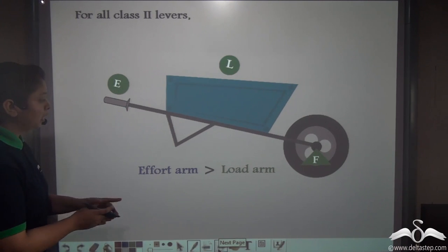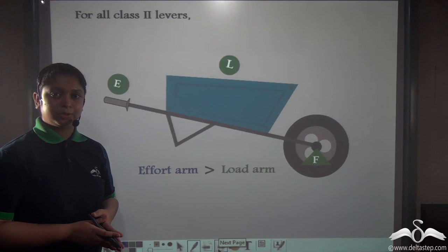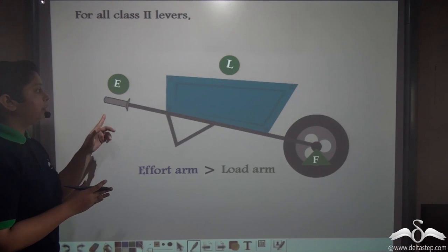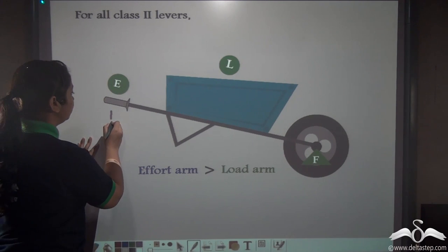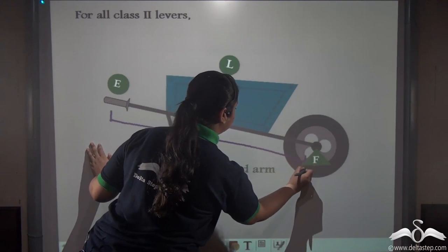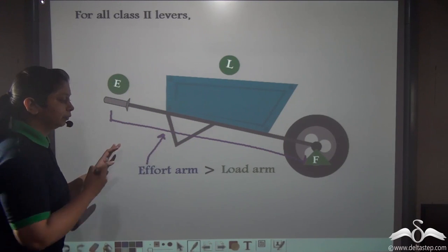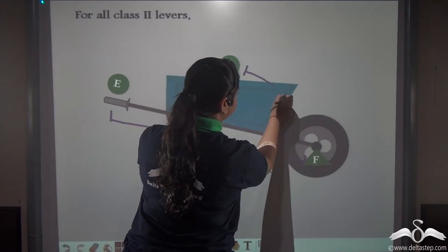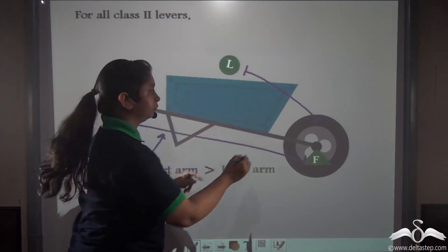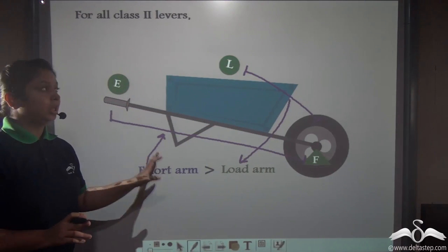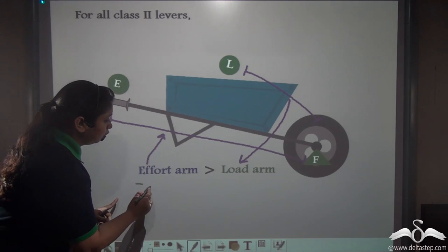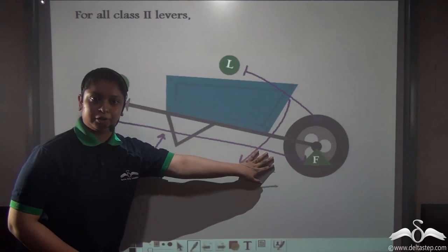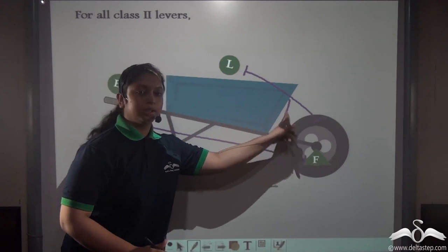Notice that in class 2 levers, the effort arm is greater than the load arm. The effort arm is the distance between the point of application of effort and the fulcrum, while the load arm is the distance between the load and the fulcrum. Since the load is always between the effort and the fulcrum in class 2 levers, the effort arm will always be greater than the load arm.